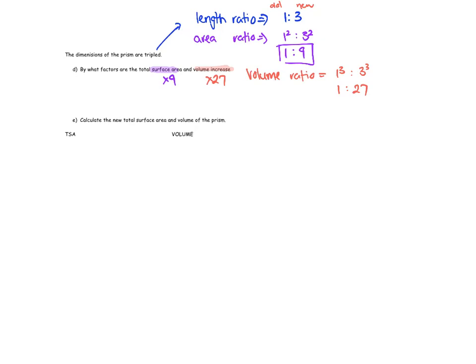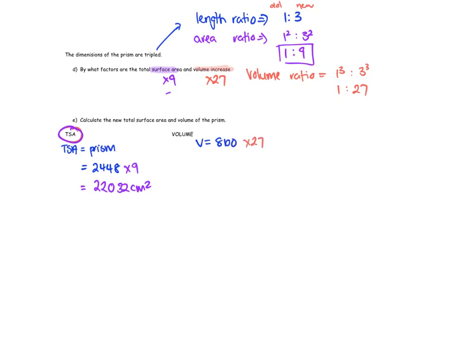To calculate the new total surface area of the prism: the original was 2,448, and multiplying by 9 gives 22,032 square centimeters. For the new volume: the original was 8,100, and multiplying by 27 gives 218,700 cubic centimeters. These are easy marks — make sure you get them.